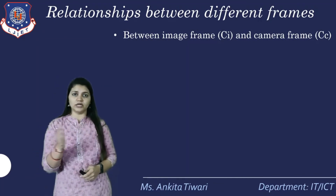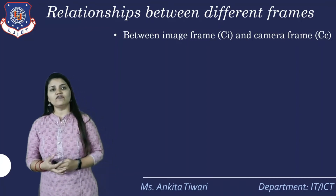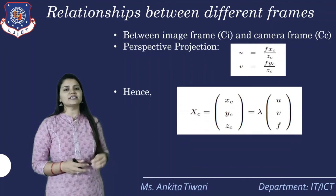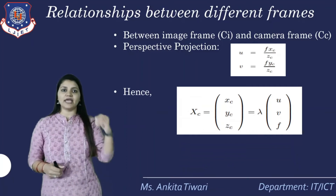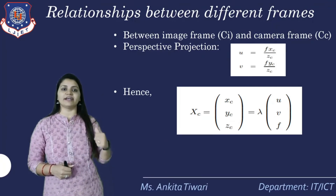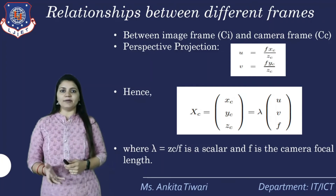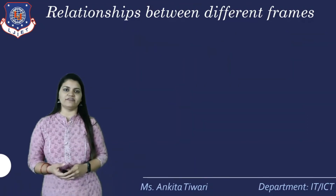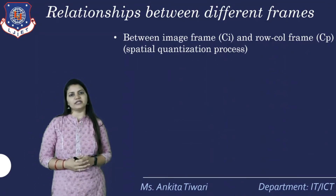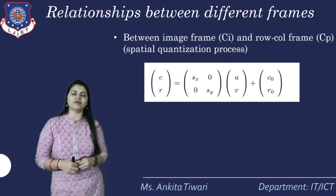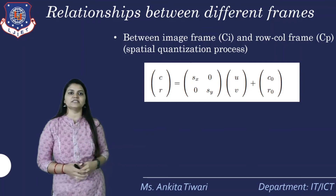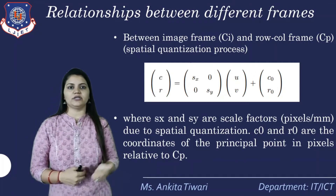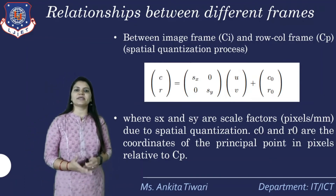Between the image frame CI and the camera frame CC, perspective projection is defined as U = F·Xc/Zc, V = F·Yc/Zc. Hence Xc equals the center coordinate in X and Y, giving (Xc, Yc, Zc), and lambda is the scalar factor from the vector (U, V, F), where lambda = Zc/F is a scalar and F is the camera focal length. Between the image frame CI and the row-column frame CV, the quantization process is defined by scaling factors Sx and Sy (pixels due to spatial quantization) and principal point coordinates C0, R0 in the pixel frame.